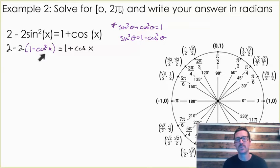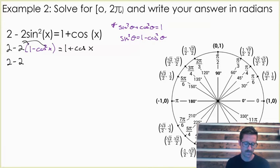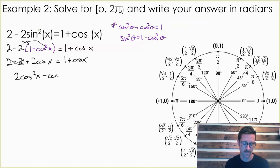And notice by making that substitution with our Pythagorean identity, we now have an equation that is only in terms of cosine. Let's do some basic algebra simplification here. Minus two cancels. And I'm going to bring everything over to one side of the equation. Now I think we're ready to do that u-substitution like we did in the last problem.